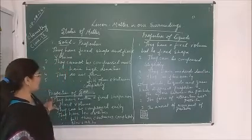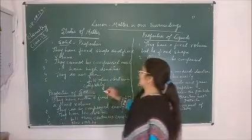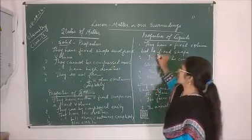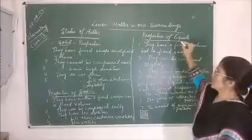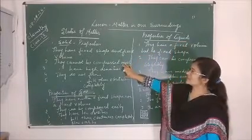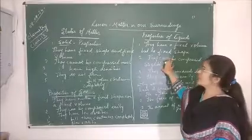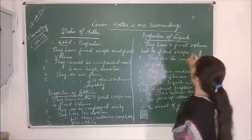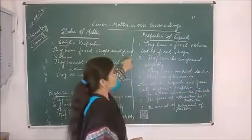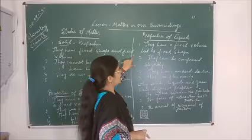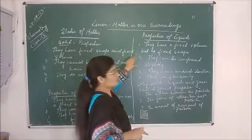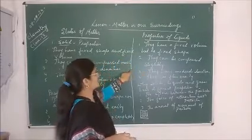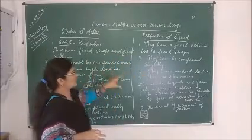Now, before studying the properties of gas, let's first study the properties of liquid. If we compare the properties of solid with those of liquid — solids have fixed shape and fixed volume, but liquids have no fixed shape, though they do have a fixed volume. That is the main difference between solid and liquid. We need to do a comparative study between solid, liquid, and gas to understand their different properties.